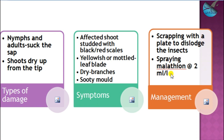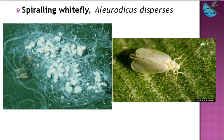The next sucking pest is the spiraling whitefly, Aleurodicus dispersus, called the spiraling whitefly due to its habit of egg laying in a spiral pattern during feeding on the viral nature.